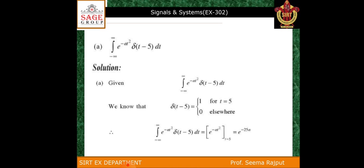For this particular function, we solve the integral by replacing δ(t−5) with 1, so the remaining function is e to the power minus 8t squared. We then put t equal to 5. Since t squared becomes 25, the answer is e to the power minus 25a.